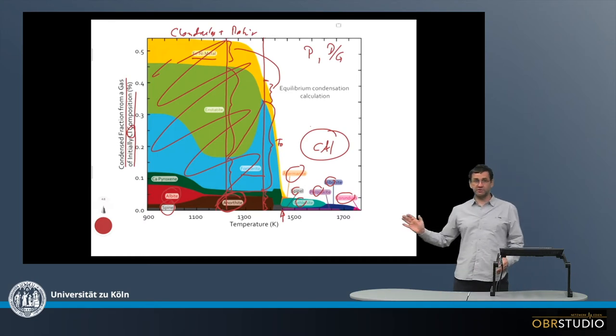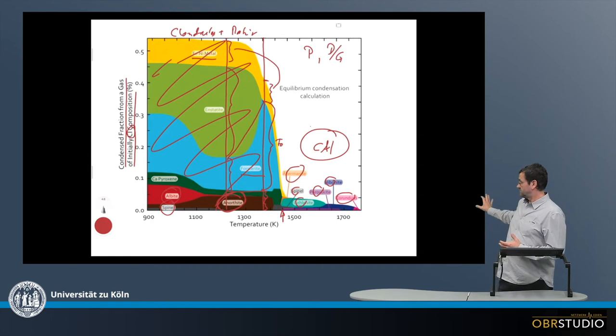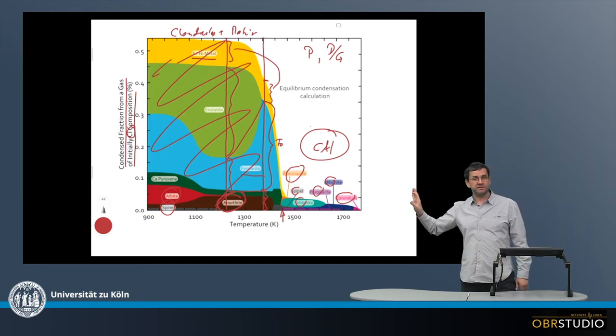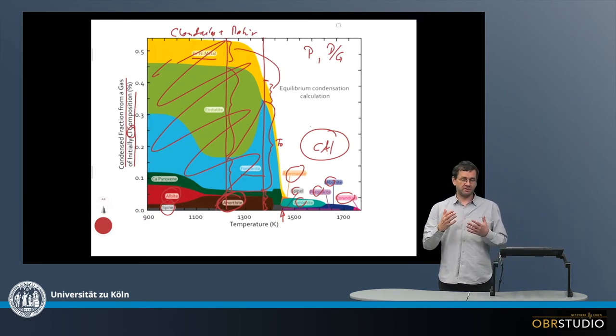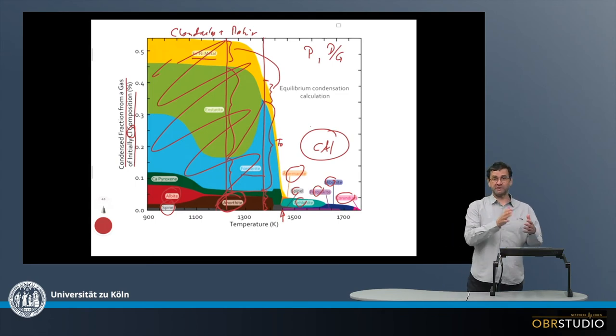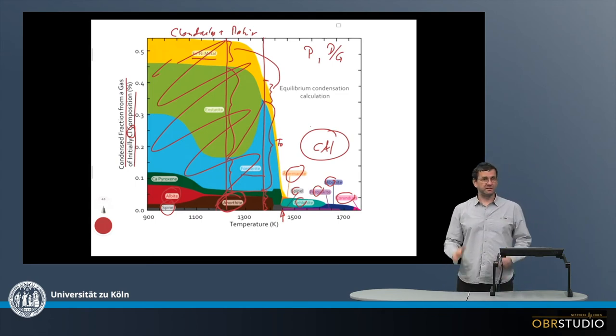And so this is how equilibrium condensation roughly works, and it's important to memorize that initially these calcium-aluminum-rich phases form, and the metal, the olivine, the pyroxene, and some feldspar, and how the ratios change, first a lot of olivine, later more pyroxene, and this would be the most essential part of this equilibrium condensation here.